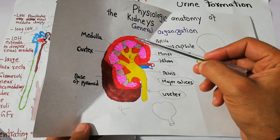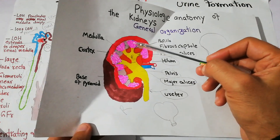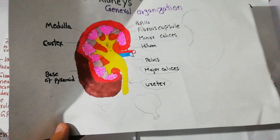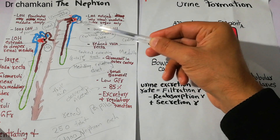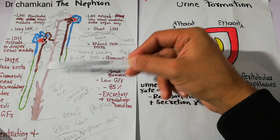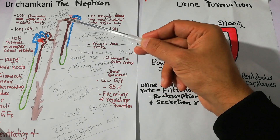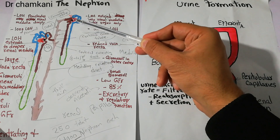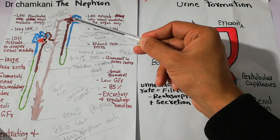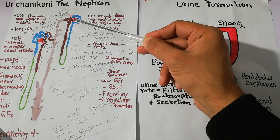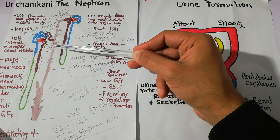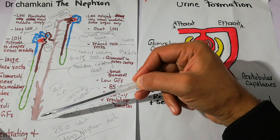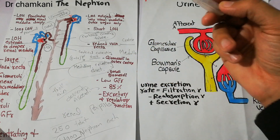If we grossly look at the kidney we cannot see the nephrons with the naked eye, but when we enlarge one nephron it looks like this, and thousands of such nephrons are connected together and they are making urine. The blood is coming, it is filtered at the Bowman's capsule, and then the filtrate moves through the proximal tubules, the loop of Henle, the distal tubules, and then through the collecting ducts the urine is excreted at the renal papilla.